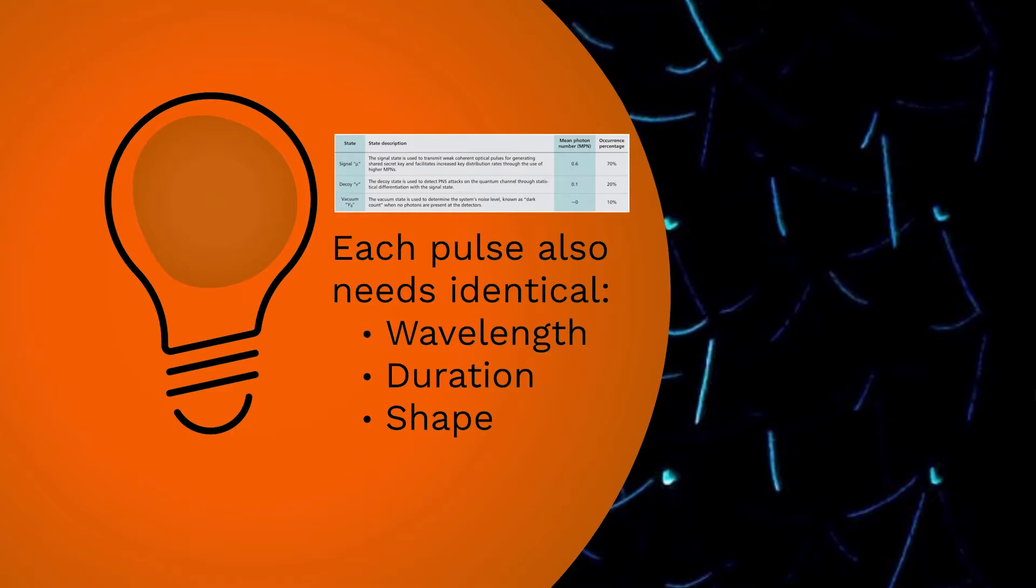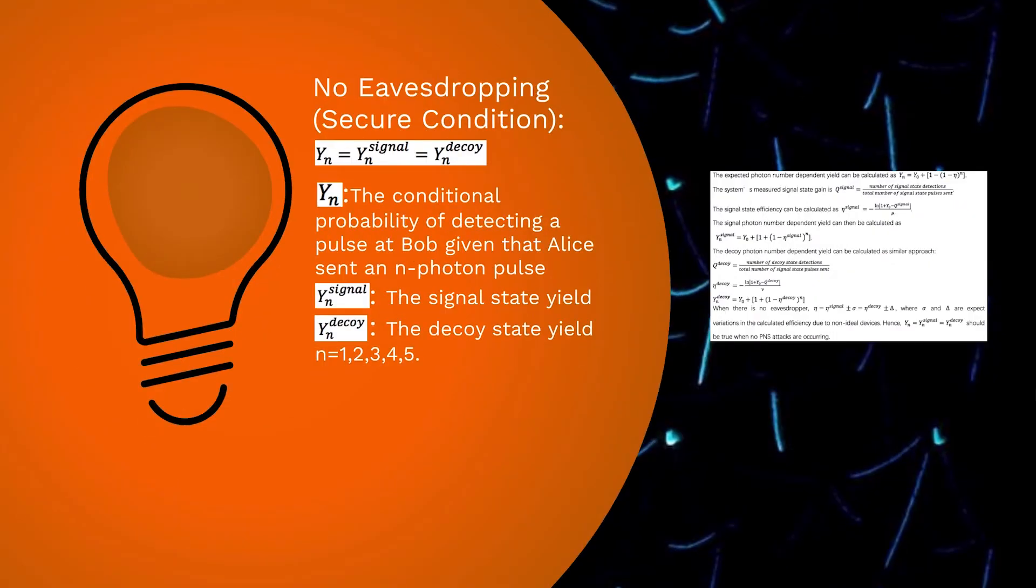Then Alice and Bob announce the basis used to prepare and measure each pulse. They also announce their states: signal, decoy, or vacuum. Next, a number of decoy state protocol calculations are made from system measurements.